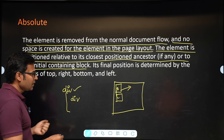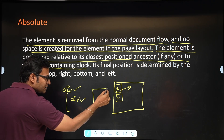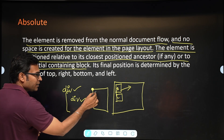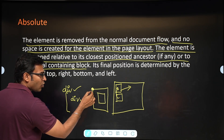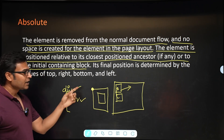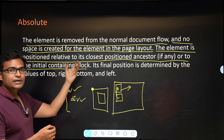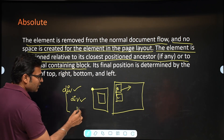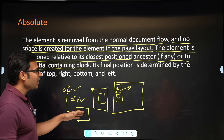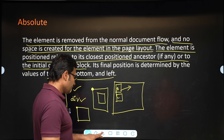For example, if there is an outer div and an inner div, you need to give positioning to the parent div. The inner div will then move relative to the top-left corner of the outer div. If there is no positioned parent, the element will take the top-left of the screen as its reference point and move from there. The final position is determined by top, right, bottom, and left.